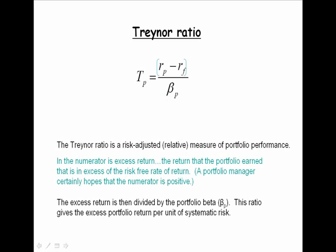The denominator is the beta of the portfolio. So the ratio again gives us excess return per unit of risk. Here, we've got excess return per unit of systematic risk.